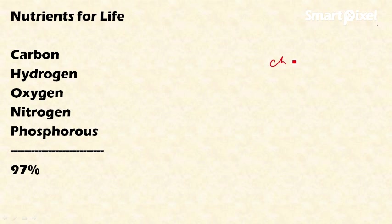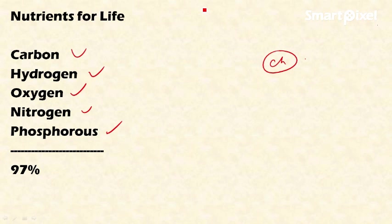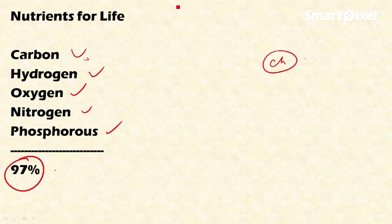The important chemicals in biogeochemical cycles are carbon, hydrogen, oxygen, nitrogen, and phosphorus. These five elements constitute about 97% of the body weight of living organisms. Carbon is needed for proteins, DNA, and RNA; hydrogen is an important component of water; oxygen is needed for breathing; and nitrogen is an essential component of proteins and amino acids.